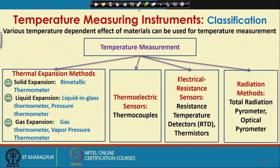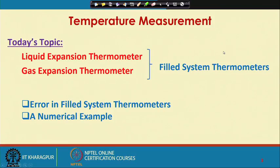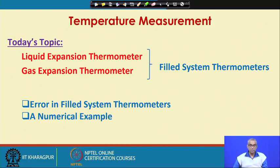Welcome to lecture 35, the last lecture of week 7. We are talking about temperature measuring instruments and have discussed temperature measurements based on thermal expansion of materials — thermal expansion of solid, liquid, and gas. We have covered bimetallic thermometers, liquid in glass and liquid in metal pressure thermometers, gas thermometers, and vapour pressure thermometers. Today we will talk about some more aspects of liquid expansion thermometers and gas expansion thermometers.